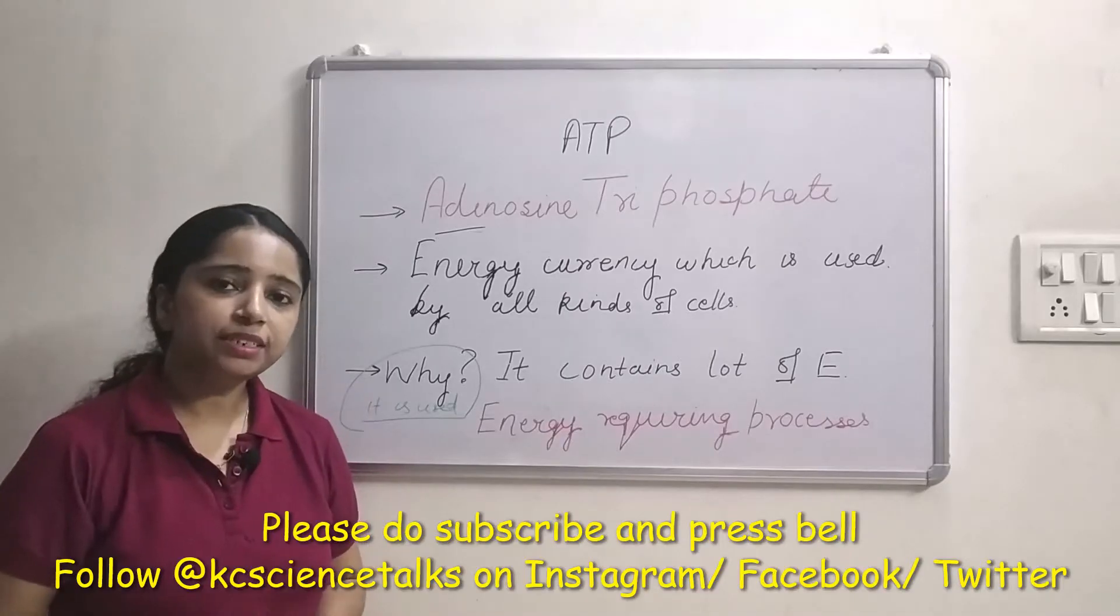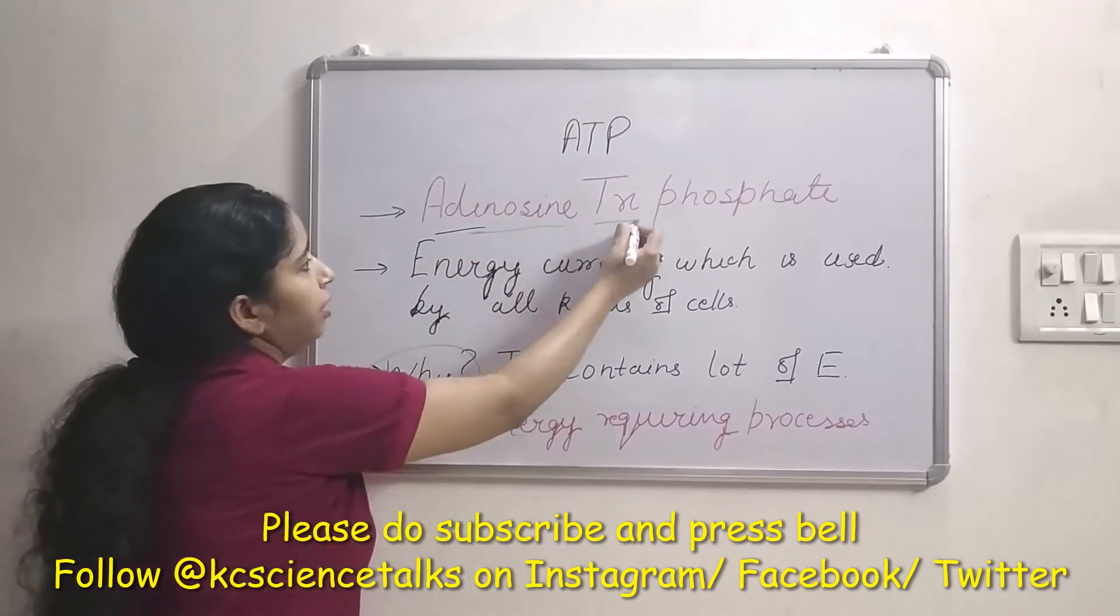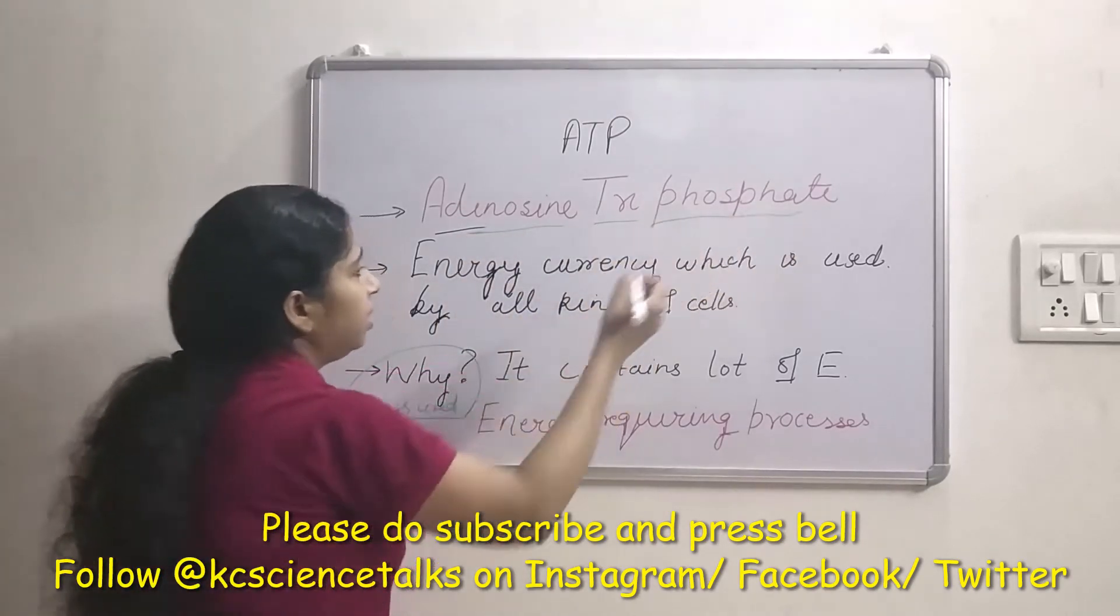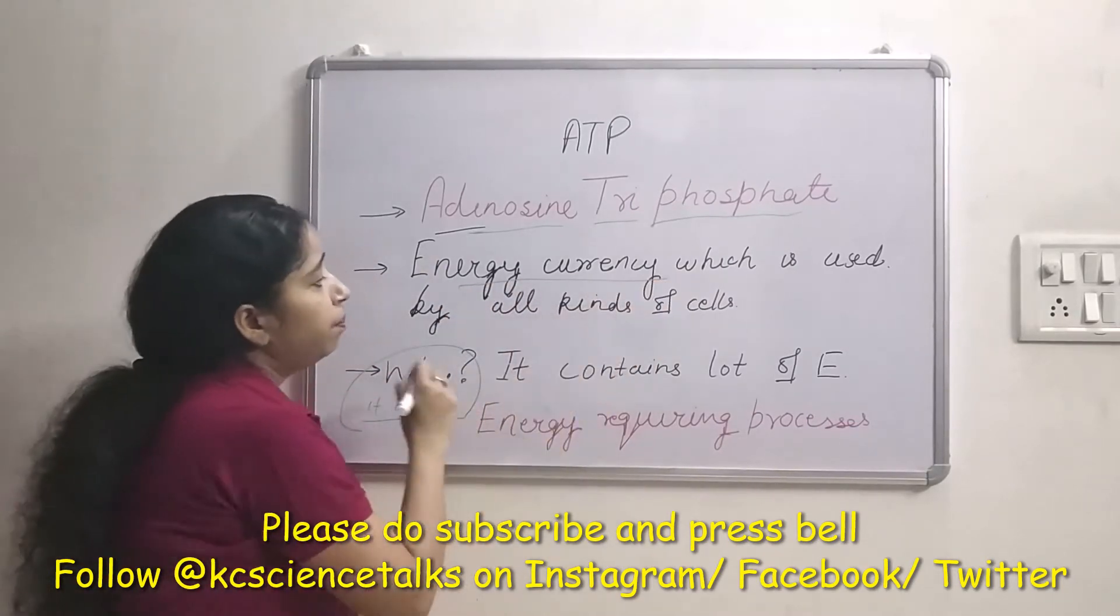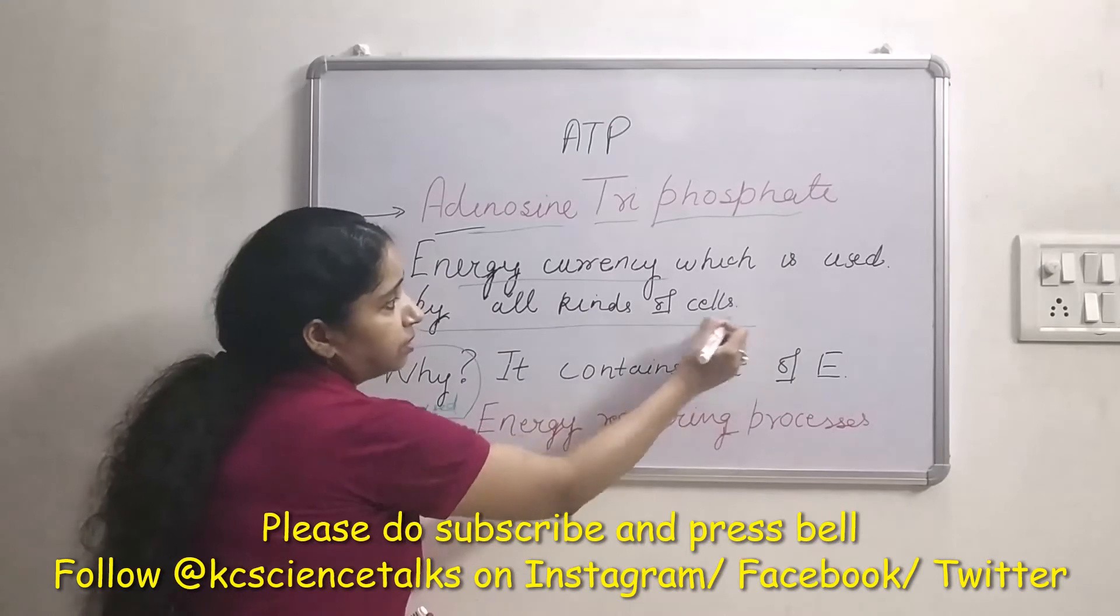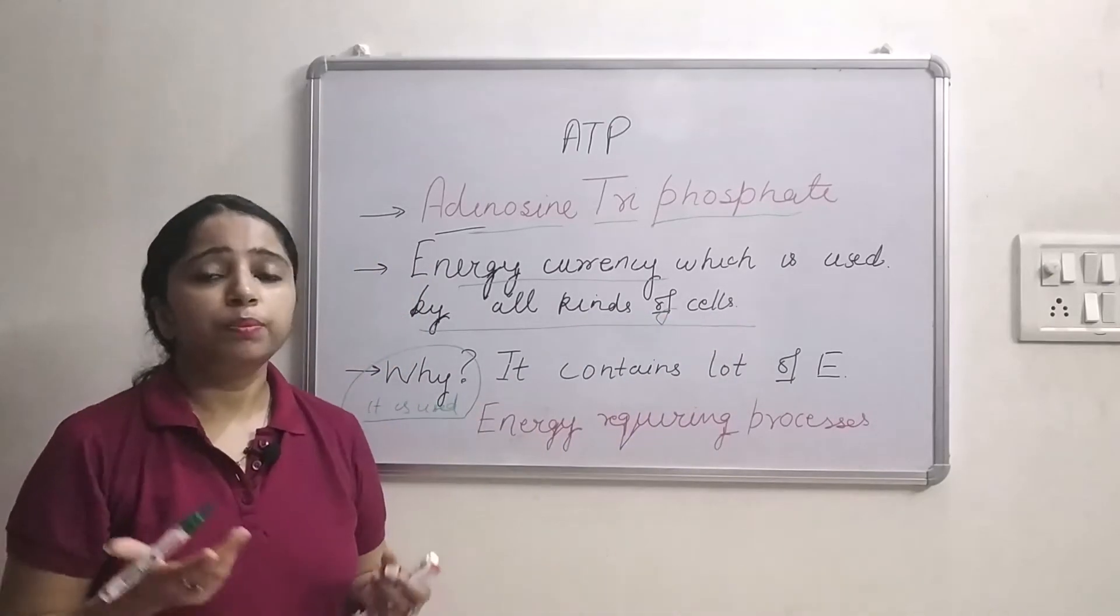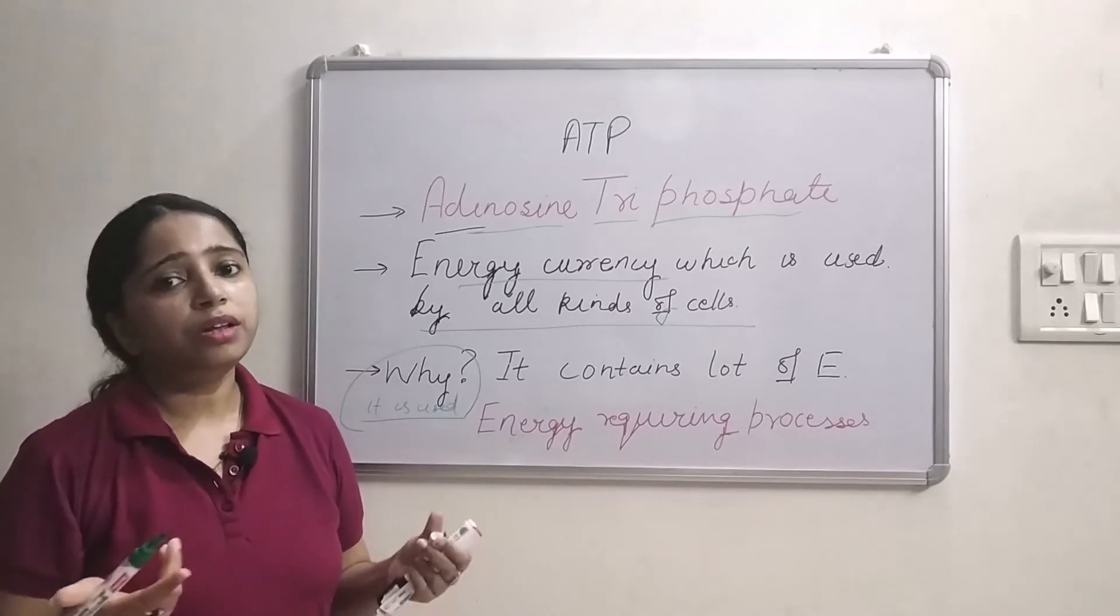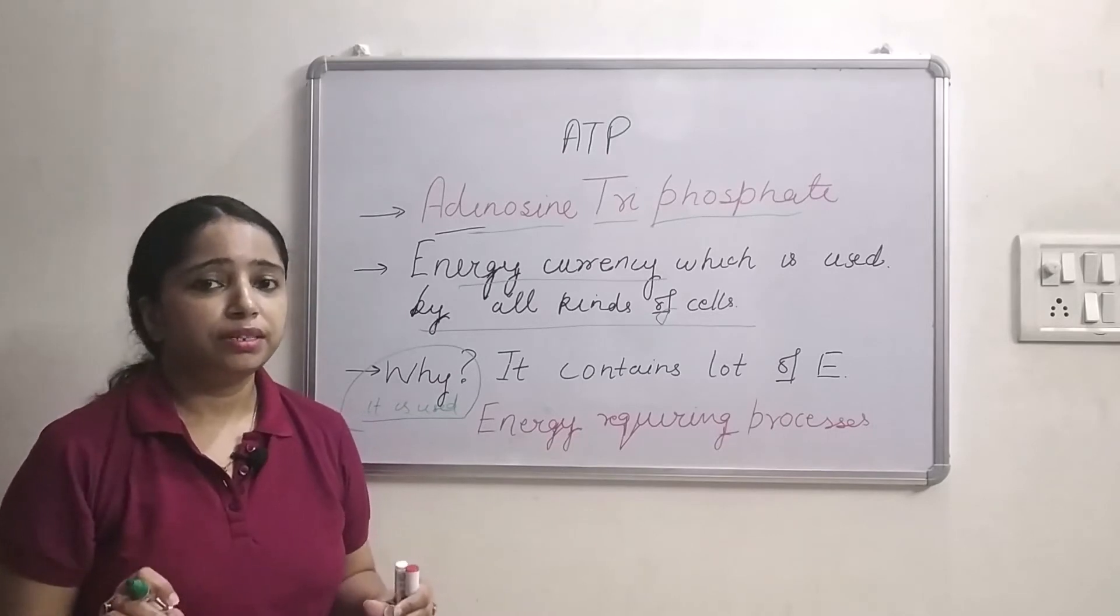So what is ATP? ATP is adenosine triphosphate. ATP is used as an energy currency by all kinds of cells, be it prokaryotic cell or a eukaryotic cell. They all use ATP as their energy currency.